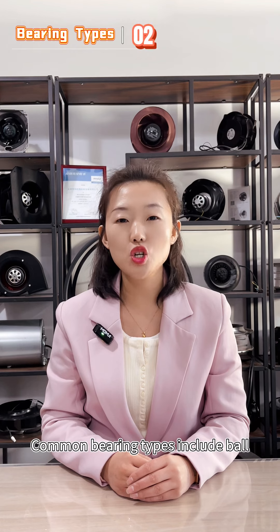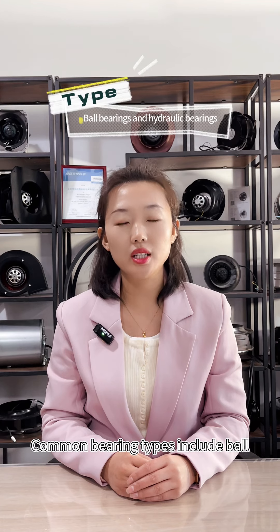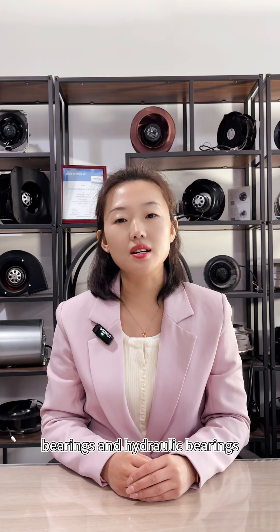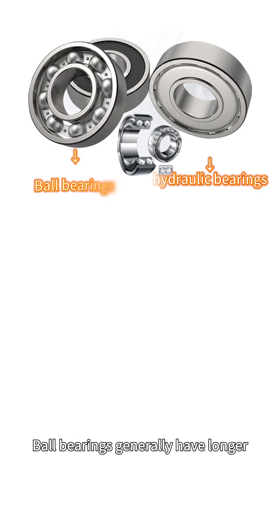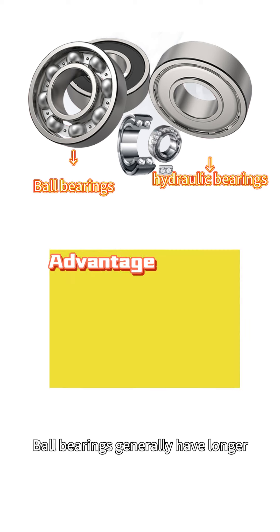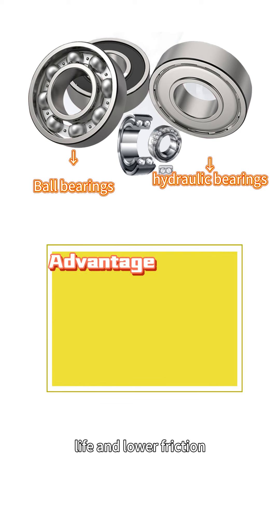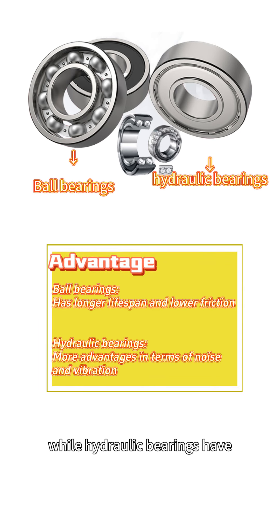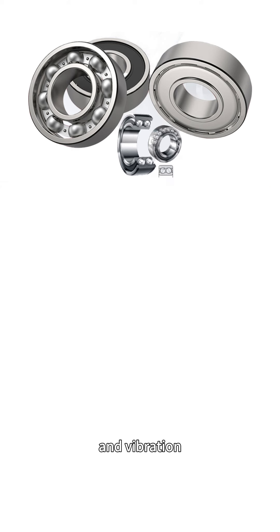2. Bearing types. Common bearing types include ball bearings and hydraulic bearings. Ball bearings generally have longer life and lower friction, while hydraulic bearings have advantages in terms of noise and vibration.